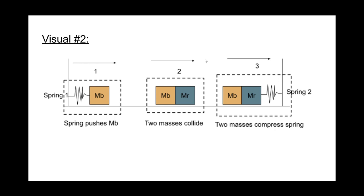The way we thought about this problem is that we viewed it as an energy problem and an impulse problem. It starts with a compressed spring that is released and pushes a block forward, which is energy. From here, the block travels along the frictionless surface until it connects with the other block and continues moving, which is impulse. From here, the blocks stuck together continue sliding until they connect with an identical spring on the other side and compress it some distance — which is energy as well. We are looking for that final spring compression as our final answer.